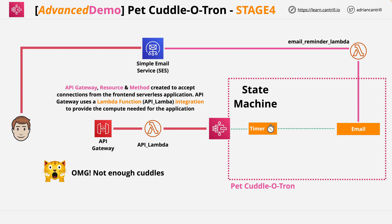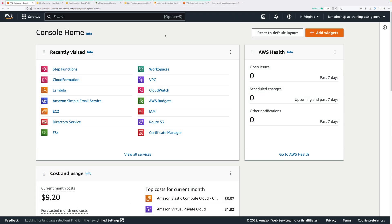We'll be creating that gateway, creating an API itself, and a method on that API, which is how the client application can interact with the API. We'll also be creating a Lambda function which provides the compute required to service that API. When the client app connects to the API Gateway using the method, the Lambda function will be invoked and the only billing will be for the compute time used as part of the event-driven architecture. Let's move across to the console and get it implemented — we're going to be creating the Lambda function and setting up the API Gateway.